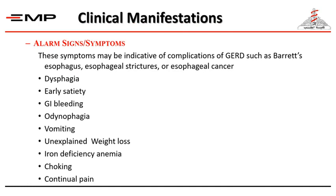The third category is alarm signs and symptoms, which may be indicative of complications of GERD such as Barrett's esophagus, strictures, or development of adenocarcinoma. These include dysphagia, early satiety, bleeding, odynophagia, vomiting, unexplained weight loss, iron deficiency anemia, choking, and continuous chest pain. These alarming signs and symptoms must be taken very seriously and investigated.